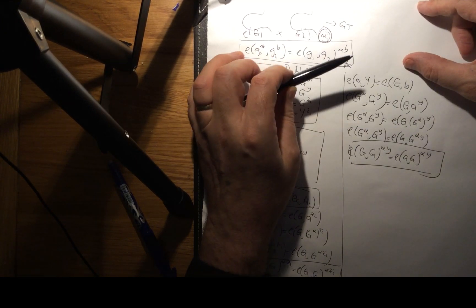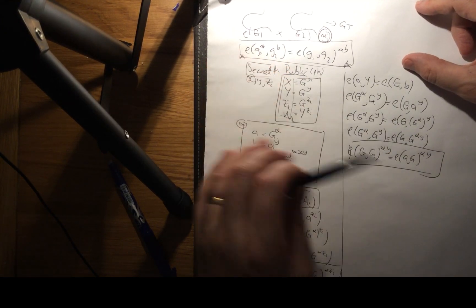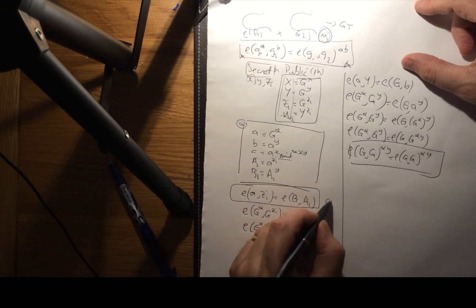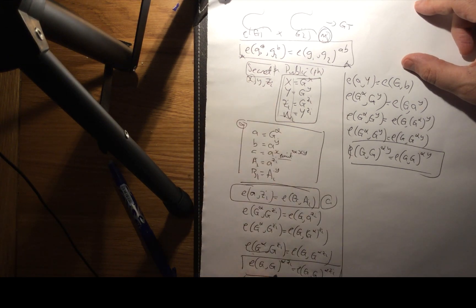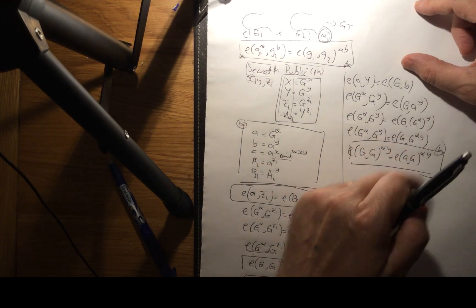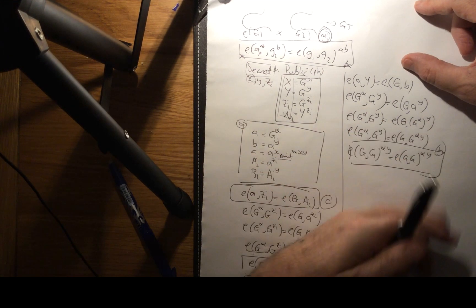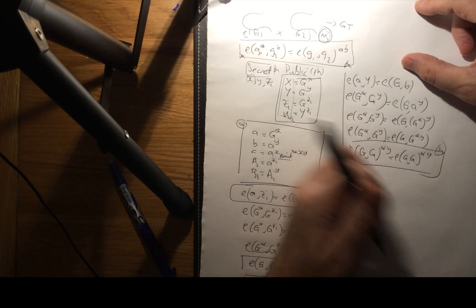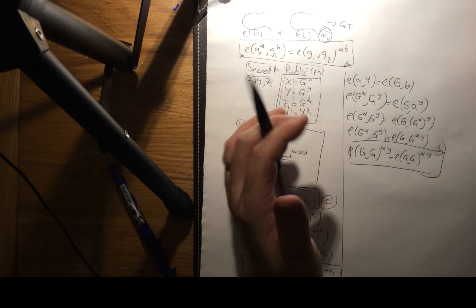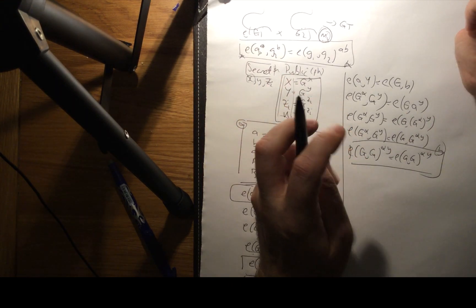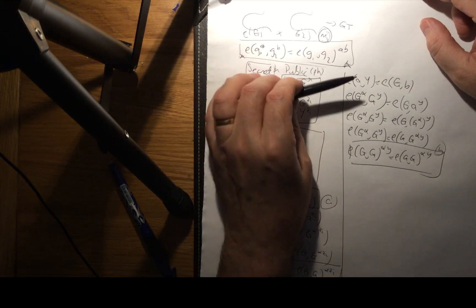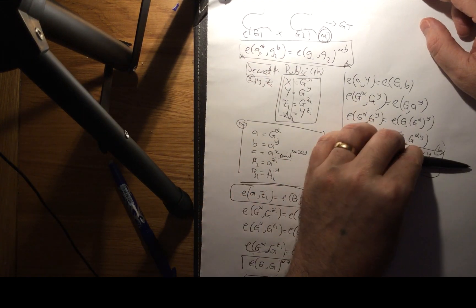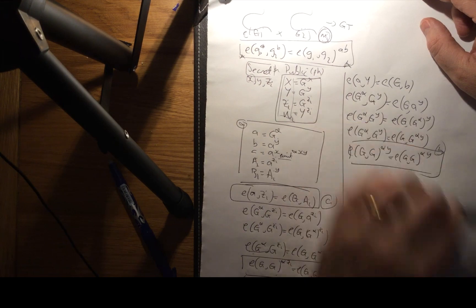We go through four different stages: the first checks for the a value, the second checks for the b value, then we go to the c value and check that. This shows roughly how we can create a key, how we can sign, and then how we can verify.